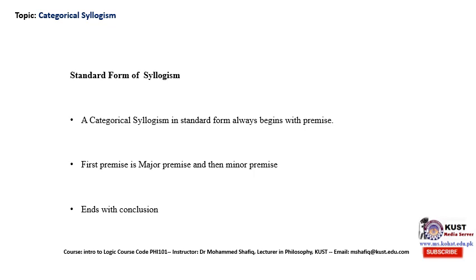Another important aspect of the form of syllogism is that the first premise is the major premise, and then it is followed by the minor premise. The major premise is the more general premise, while the minor premise is the more specific premise. So the standard form of categorical syllogism would be that it should start with the major premise — the most universal or most general premise — and then it should be followed by the minor premise, which is less general, or in other words, more specific.